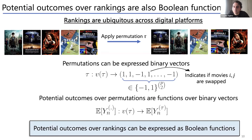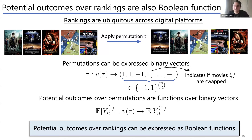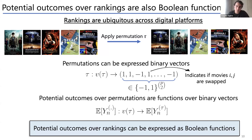[Q&A] A question about whether the mapping from permutations to boolean vectors is surjective: it's not a one-to-one mapping for permutations, which makes the math trickier, but the algorithm remains the same. Because it's not bijective, there are more compact representations for permutations discussed in the paper.